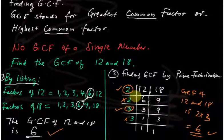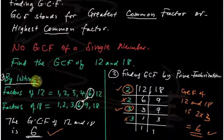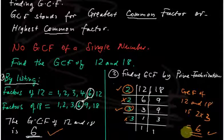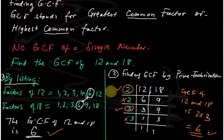So the GCF of a number can be found either by listing the factors and finding the highest common one, or by prime factorization — identifying the prime factors that divide both numbers exactly, then multiplying those factors together to get the Greatest Common Factor. This works for two or more numbers.